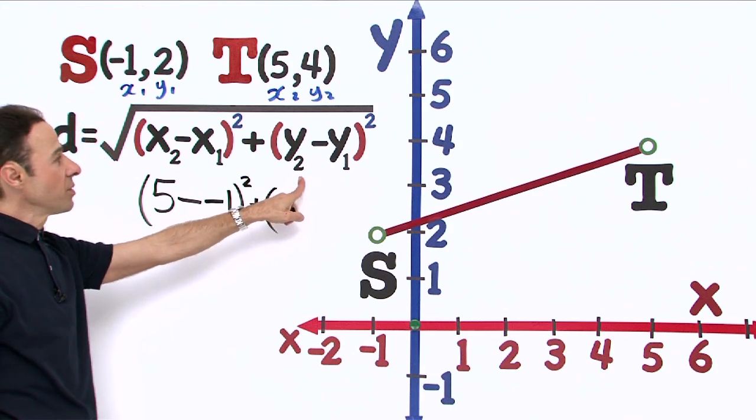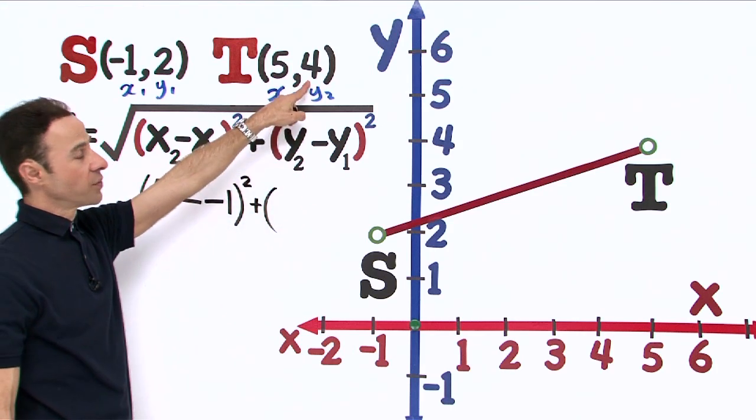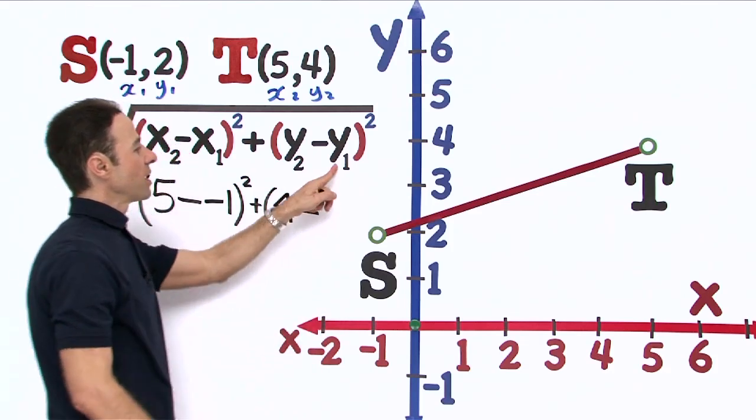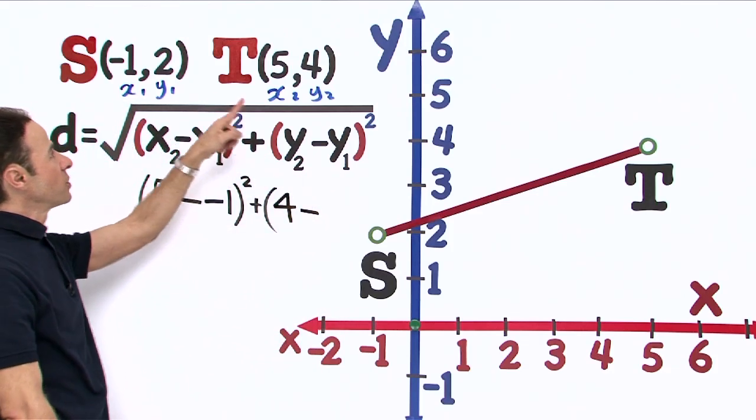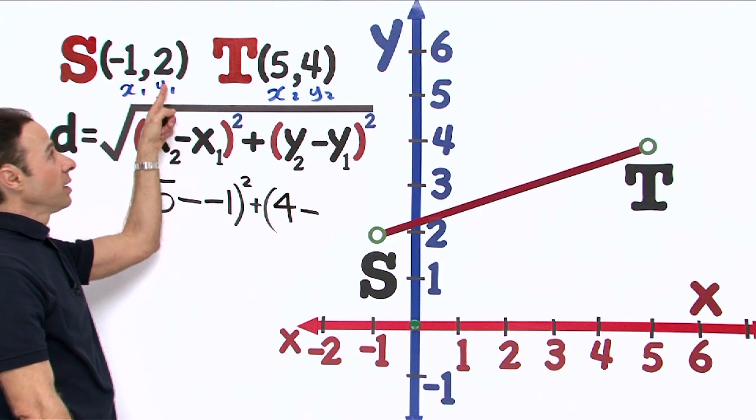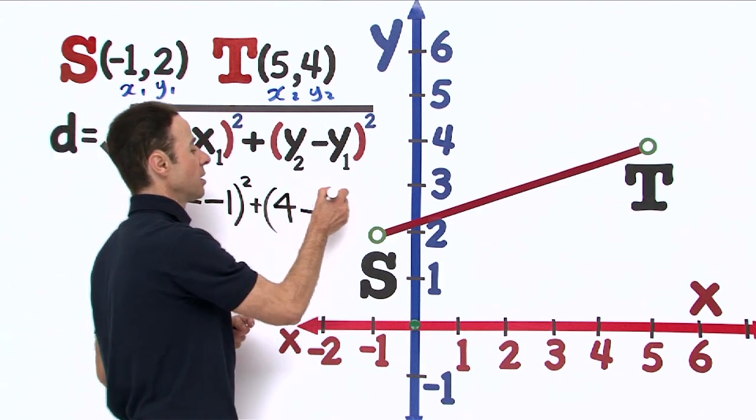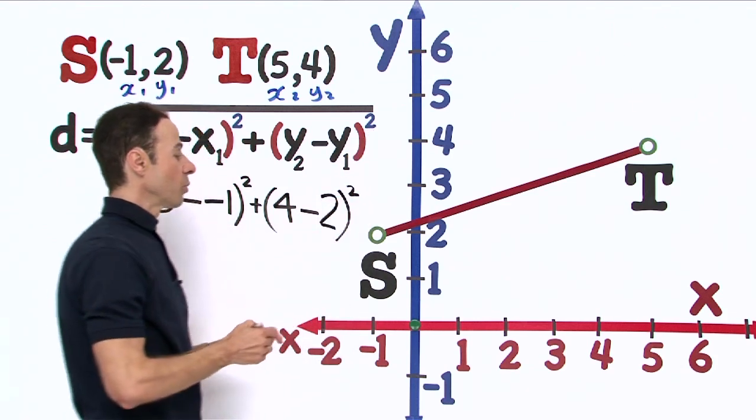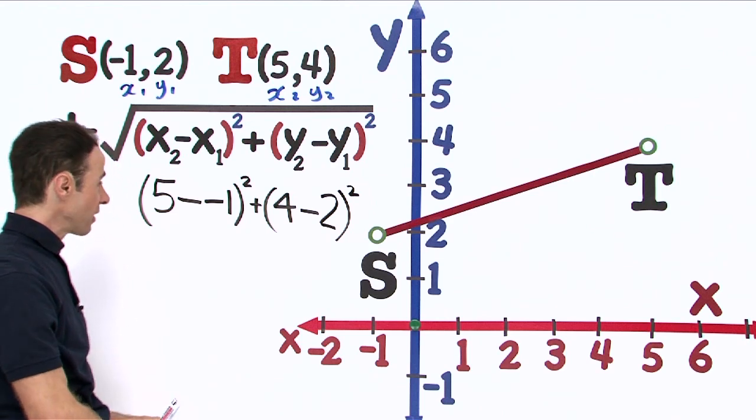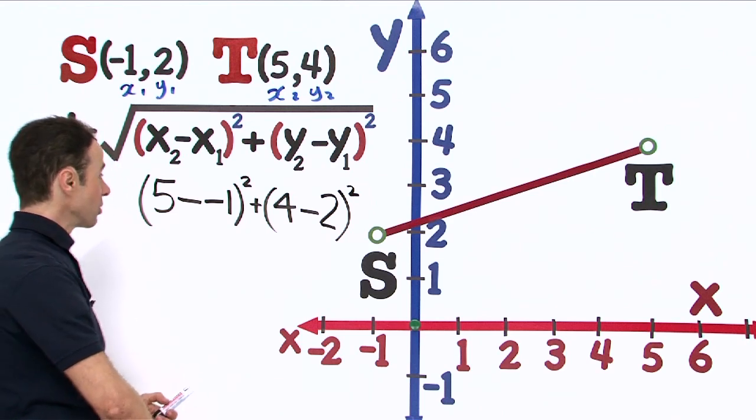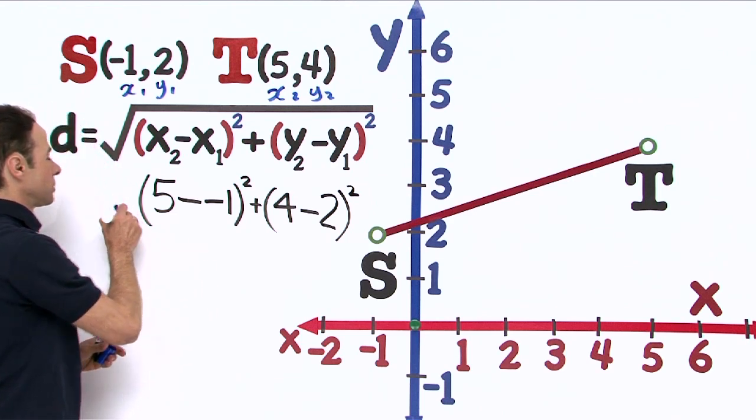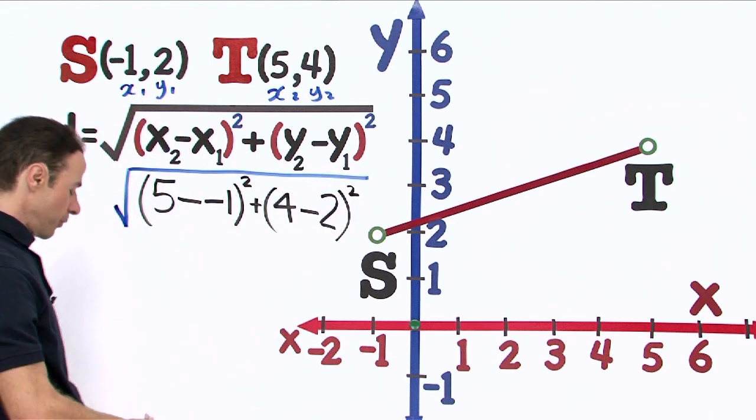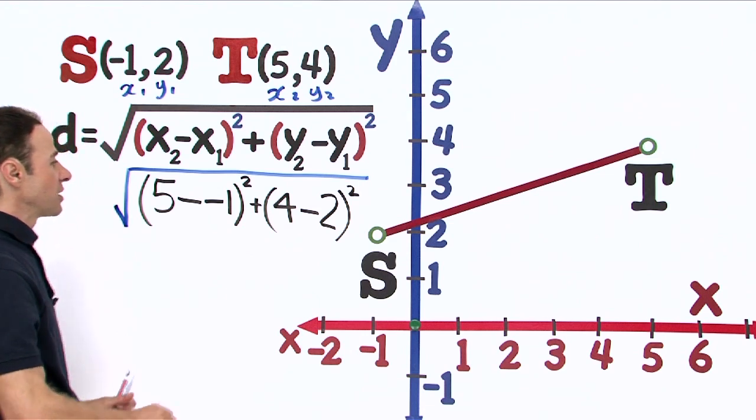Plus, let us go to y₂. That is right above us here, that is 4. Let us put that in: 4 take away y₁. Let us go back to the first point—y₁ is right here, it is 2. Put the brackets in there and of course there is the squared, and we do want to put the square root sign all over that.